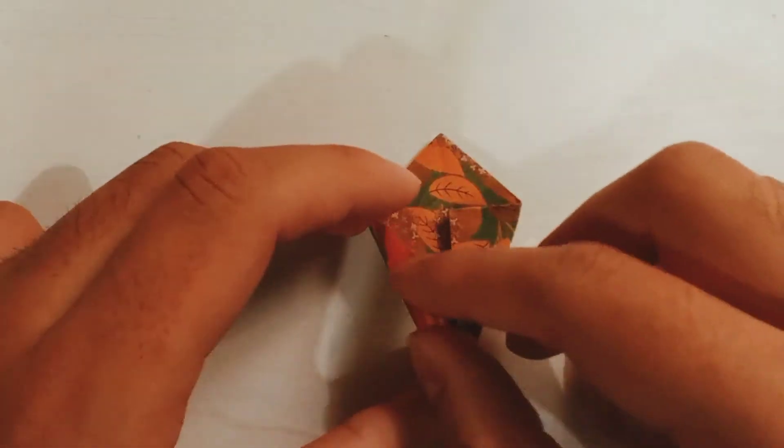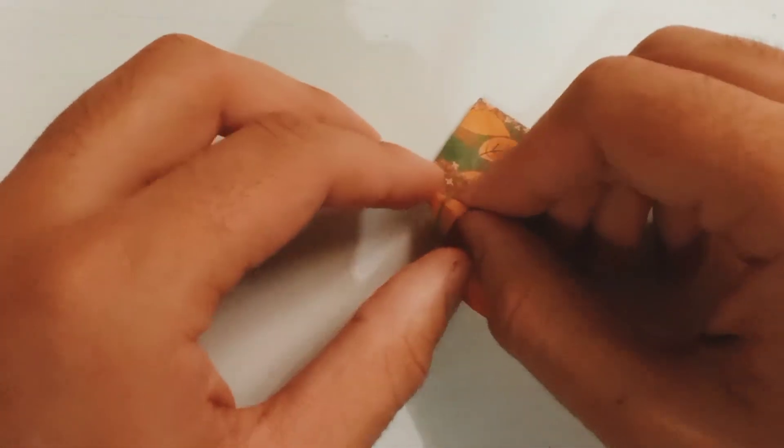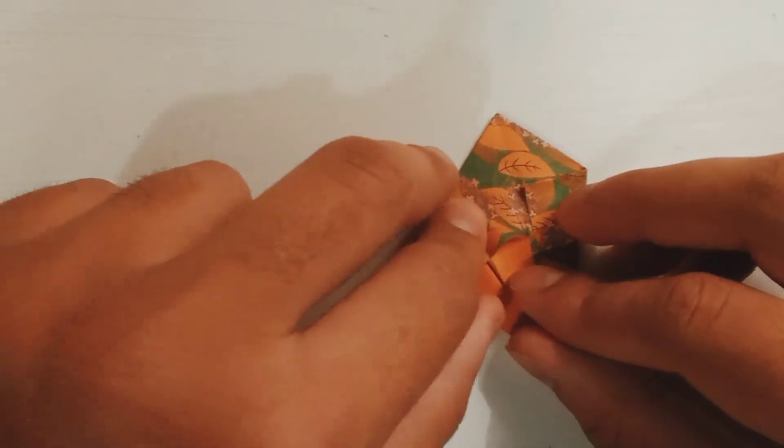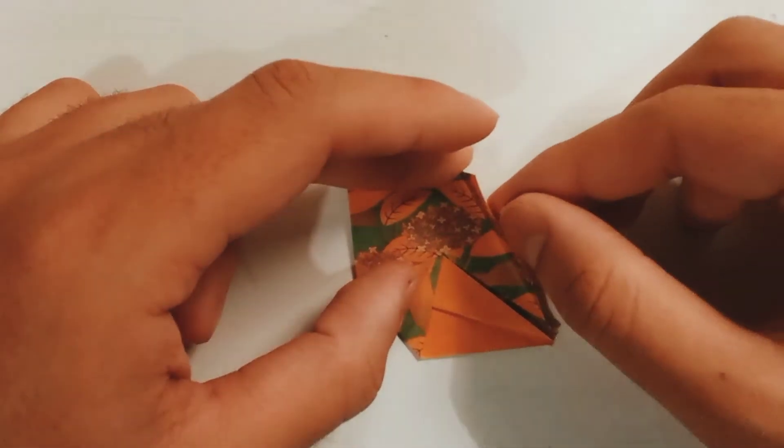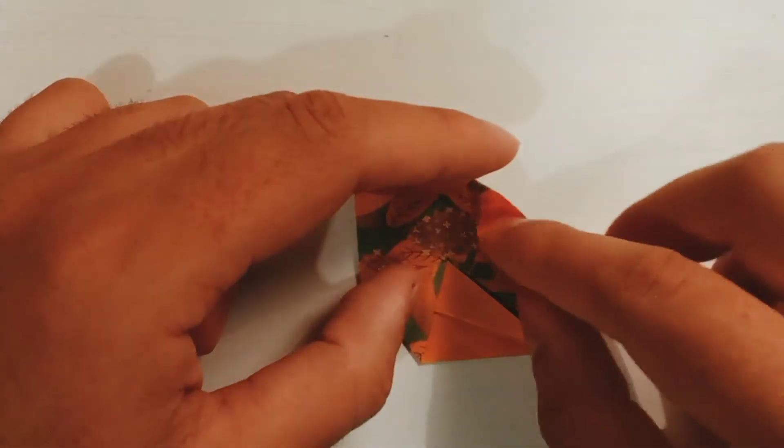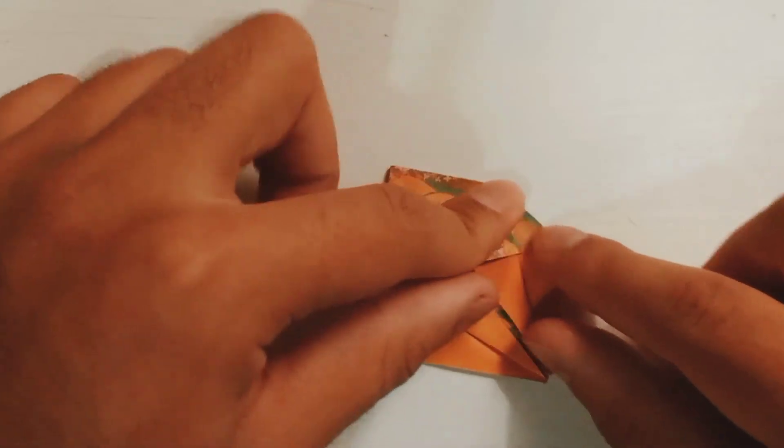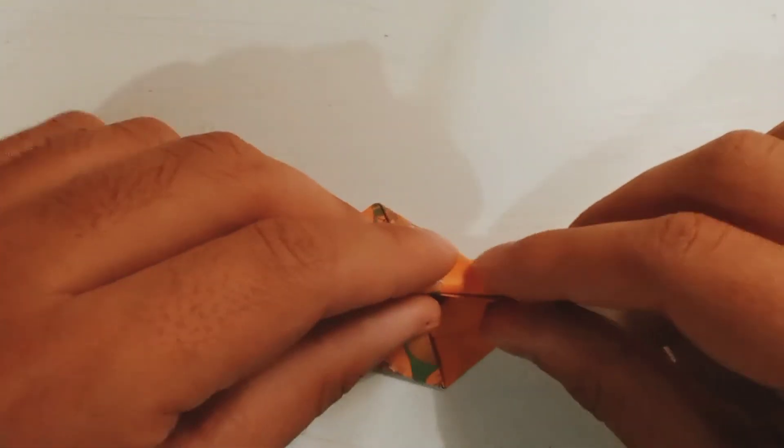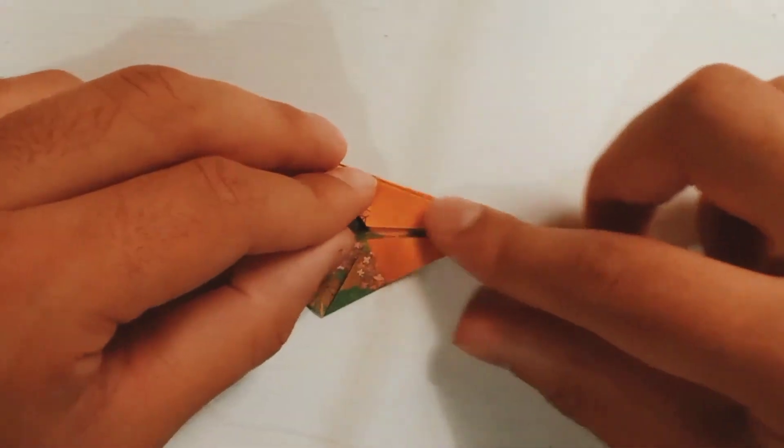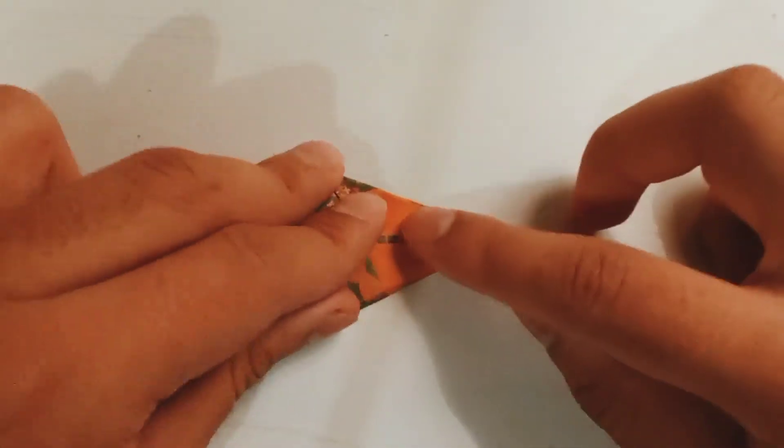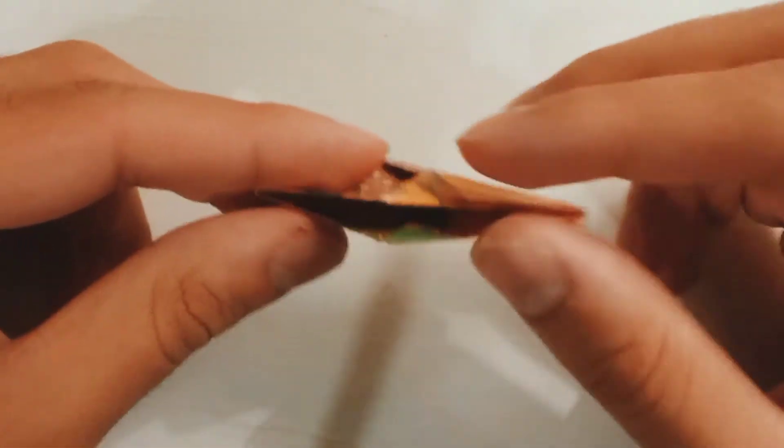Continue with the same folding process on both sides. After you complete this side, you can see there are two inside over here and two of them are here.